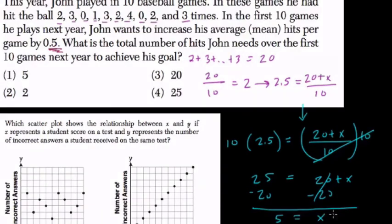So that means he'll have to hit 5 more hits this upcoming year to get the new average of 2.5. Now remember, they're asking for the total number that John needs to hit over the first 10 games to achieve his goal. So I actually circled 5 first because that's what we found here.